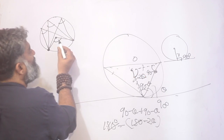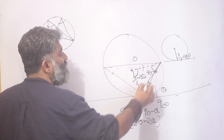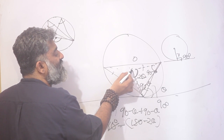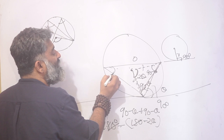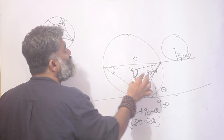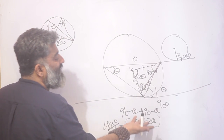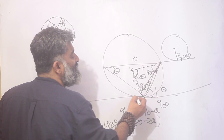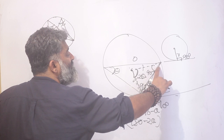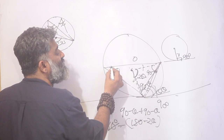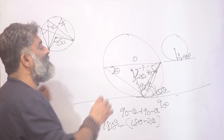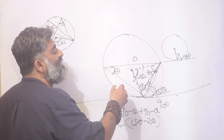Once I have the central angle as 2 theta, I use the inscribed angle theorem: the chord subtends 2 theta at the centre, so it subtends theta at the circumference anywhere else. Therefore, if the angle between the tangent and the chord is theta, the angle created by the same chord in the alternate segment is also theta. That is the core idea, and as seen in the previous example, other geometric properties can be layered around it.